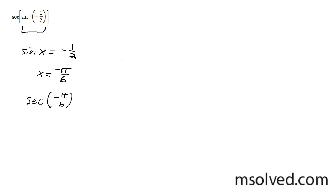I can draw this here. So negative pi over 6 is roughly equal to this. This right here is root 3, this is negative 1, and this is 2. Secant is the reciprocal of the cosine.